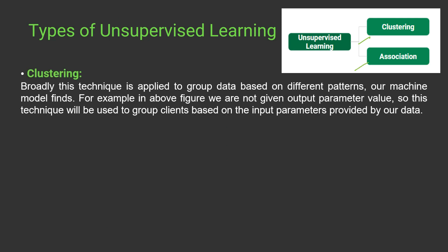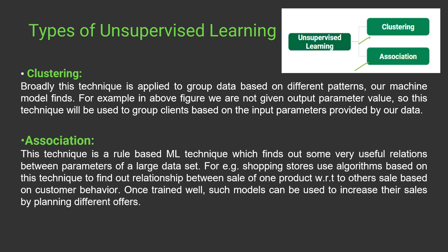In clustering, we group our data based on different patterns. We don't have any parameter value but we group the dataset into different clusters based on the patterns they follow. In association, we combine datasets and find a certain pattern to split data into clusters. For example, shopping stores use association algorithms to find relationships between the sales of one product with respect to another based on customer behavior. A project on this technique is included in this course.